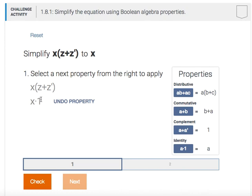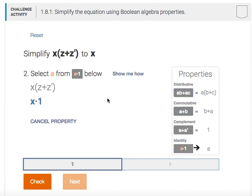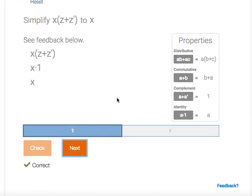Now I want to replace x and one by just x. I'm going to use the identity law here. And so it's asking me to select the a term from a and one. So there we go, we've got it down to x.